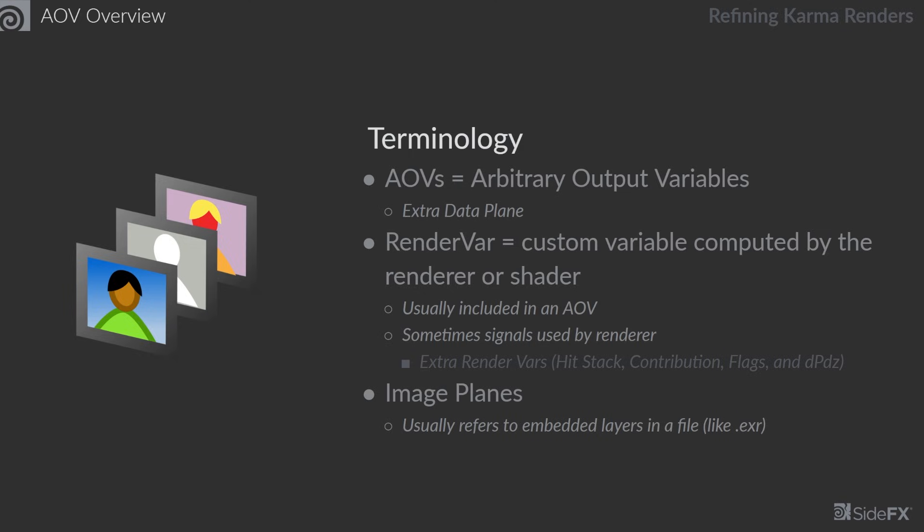A render var is another term that means a similar idea, and this comes from USD. It's basically a custom variable that's computed by the renderer or shader. This is usually included in an AOV, so a render var is usually stored in an AOV, but it doesn't have to be. Sometimes these signals are just things used by the renderer and not actually something that we want to pass out for the user to look at after the fact.